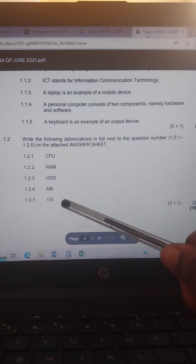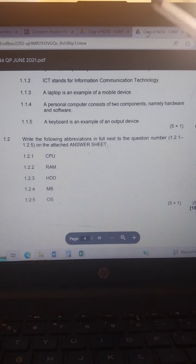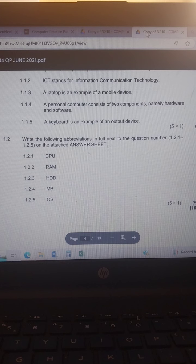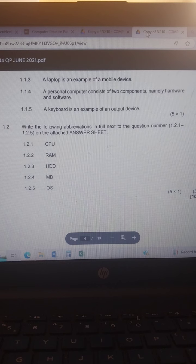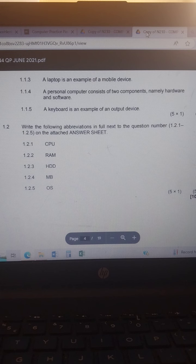Then we have OS, stands for operating system. I will repeat them again. CPU stands for central processing unit, RAM stands for random access memory, HDD stands for hard drive disk, MB stands for megabytes, and OS stands for operating system.